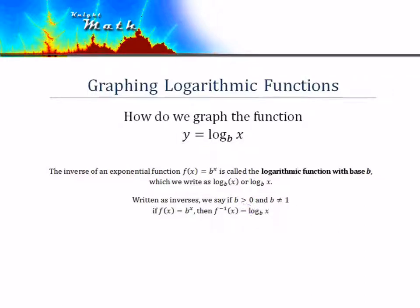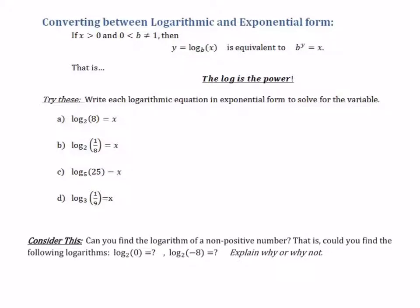The important thing to note is that b has to be greater than zero, and b cannot be one. If b is a negative number, the function bounces back and forth, so b must be positive. It can't be zero — that doesn't make any sense. And if b is one, one to any power is just one, so it's not really an exponential function.